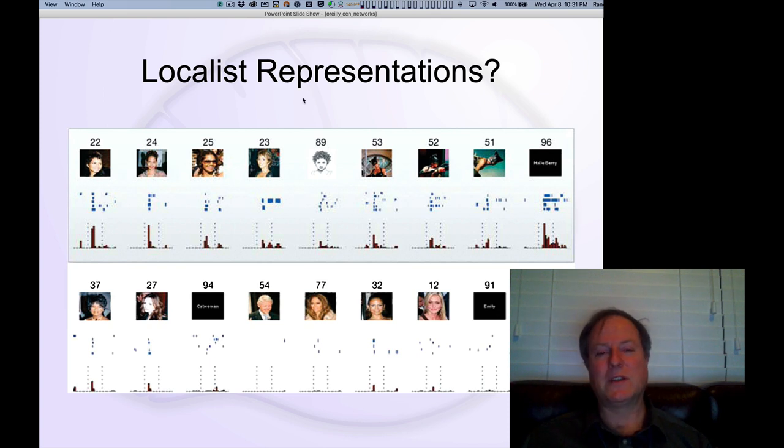These are a small subset of neurons. There are many more that don't have these very specific responses. Overall, we know that the neural responses are much more distributed.